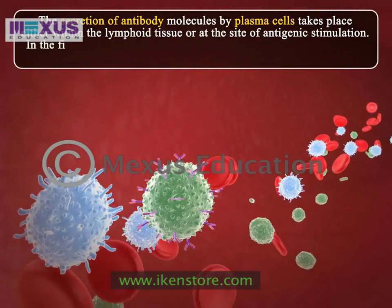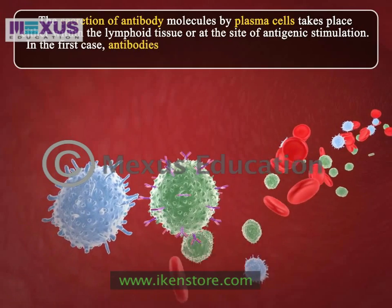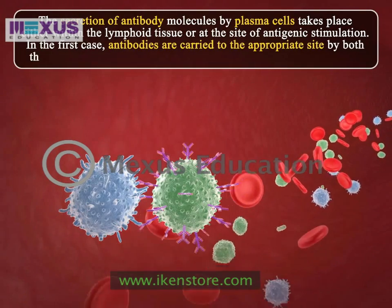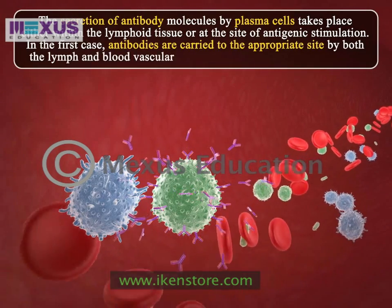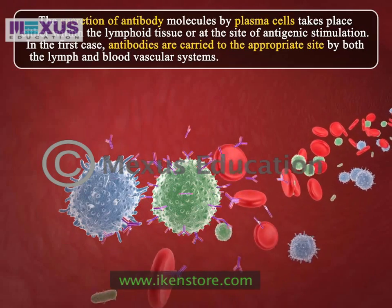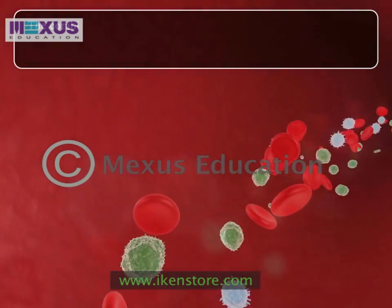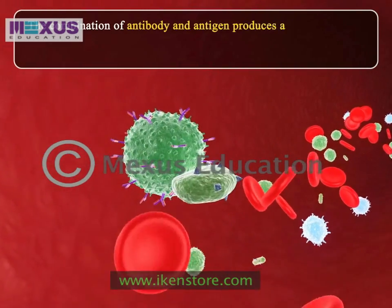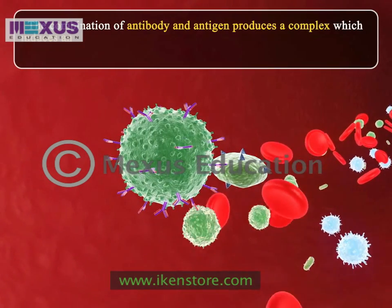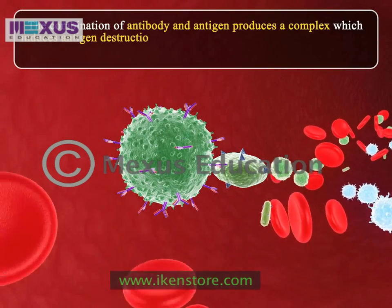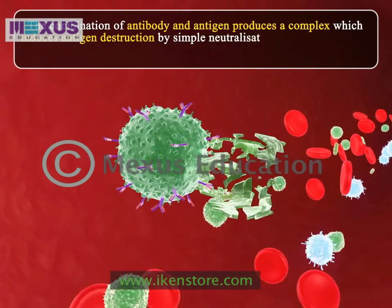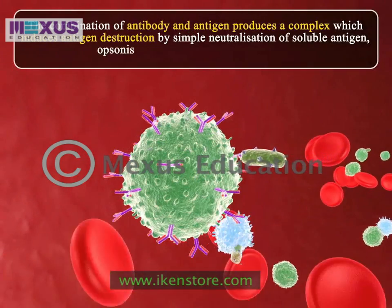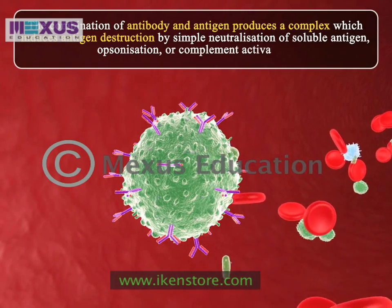In the first case, antibodies are carried to the appropriate site by both the lymph and blood vascular systems. The combination of antibody and antigen produces a complex which induces antigen destruction by simple neutralization of the soluble antigen, opsonization, or complement activation.